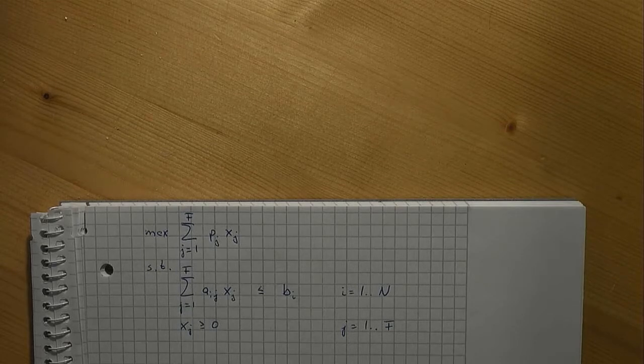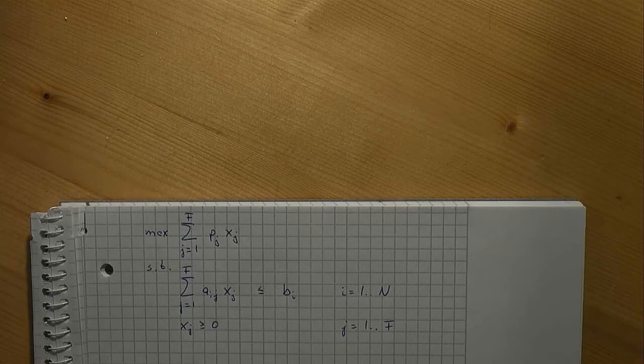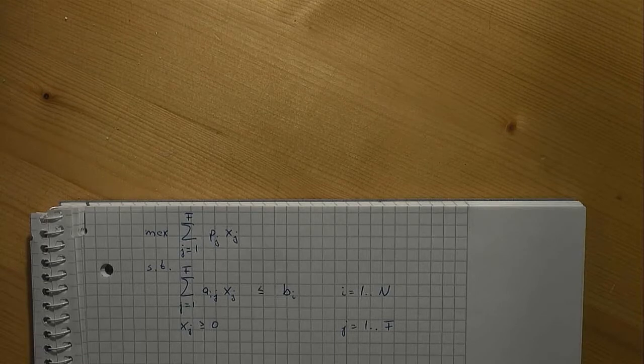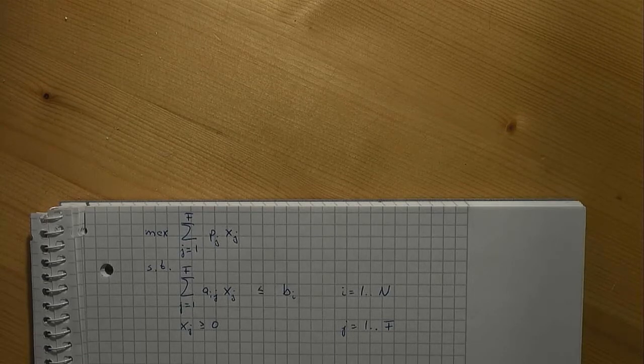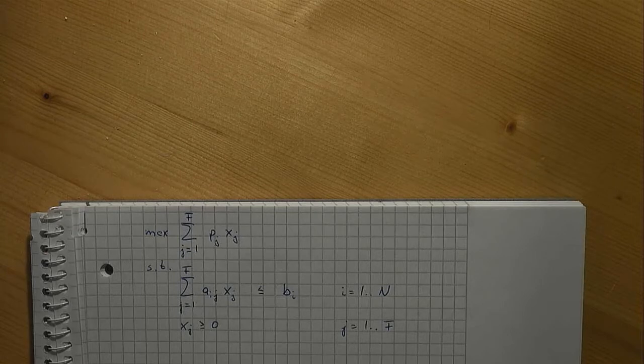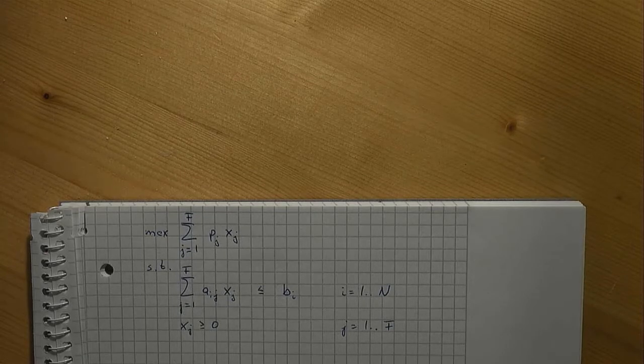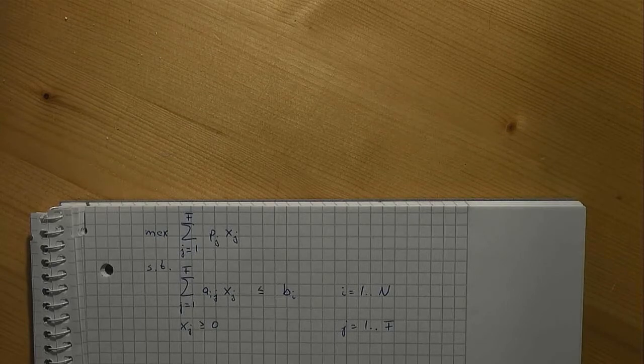For each type of furniture, we introduce the decision variable x that represents the number of pieces produced. The variable x has one index that indicates what type of furniture is made. What is important is that the naming is clear. Throughout our model, whenever we use an x, we know for sure that we have the number of furniture pieces of a certain type in mind.